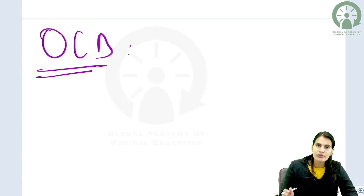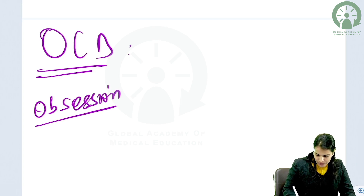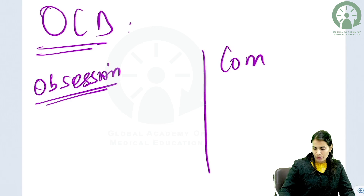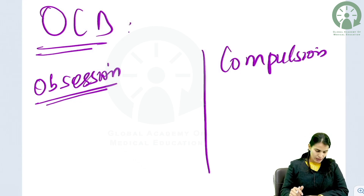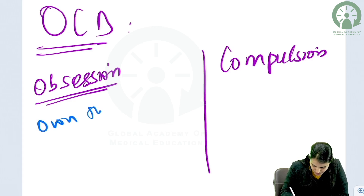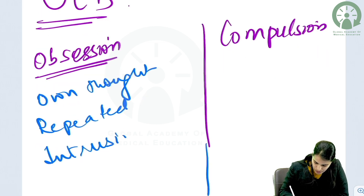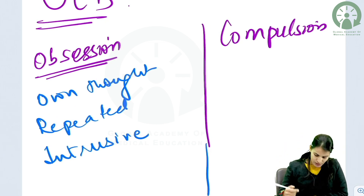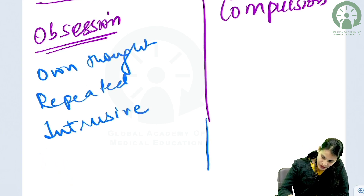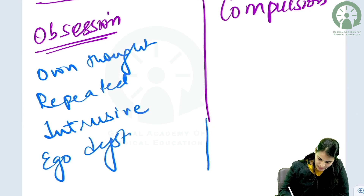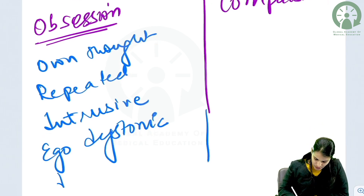OCD is Obsessive Compulsive Disorder. What are obsessions? We have covered this in the Basics of Psychiatry class as well. Obsessions are repetitive, intrusive thoughts that are a person's own, and the person is not able to control them. They are continuously running in the mind of the person and are intrusive, preventing the person from doing other work. They are ego-dystonic in nature, meaning they are stress-producing to the ego or psyche of the person, or in other words, they are distressful.